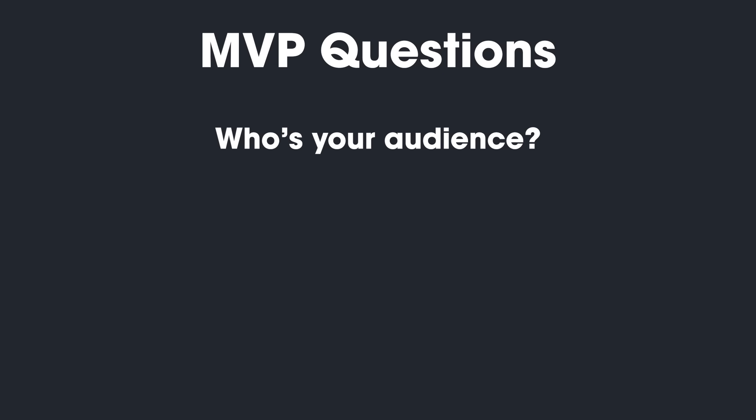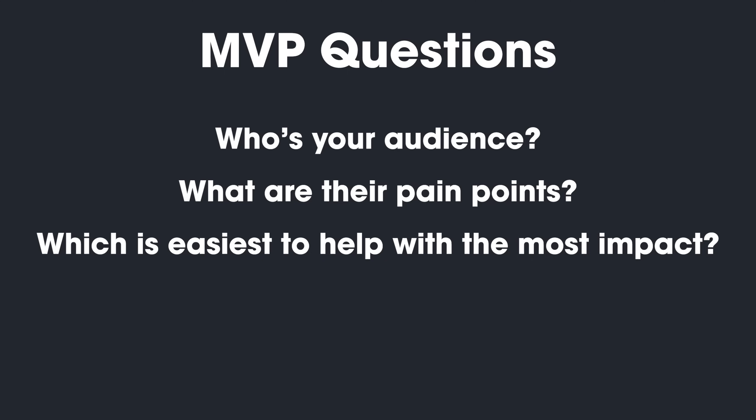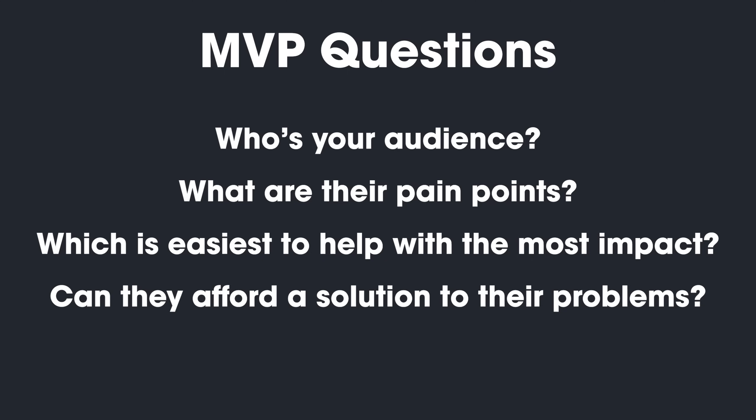They're going to lead to biased decisions and potential product failure because you're not actually delivering what you want to provide. So when actually building the MVP, how do you know what features to include and what to exclude? Sometimes it's not as cut and dry as it may seem. You have to answer a few questions: Who's your audience? What are their pain points? Which of these are the easiest to help with the most impact? And can they afford the solution to the problem?